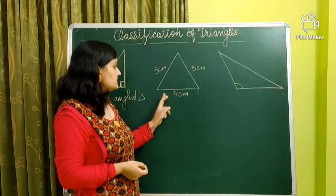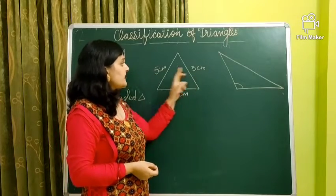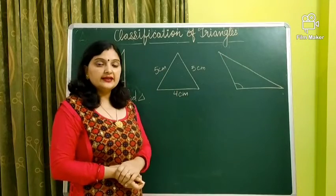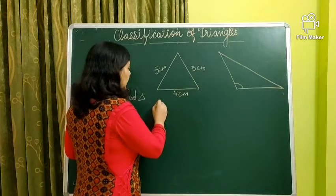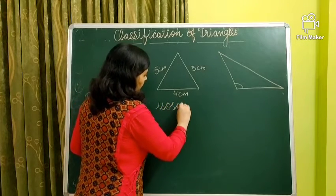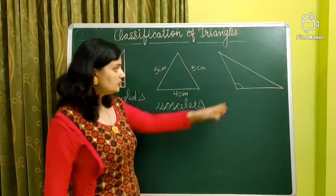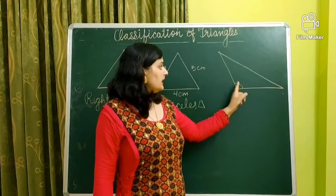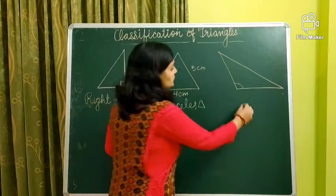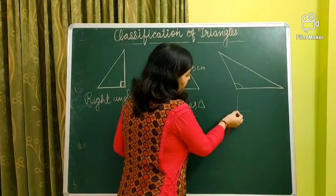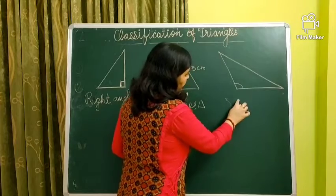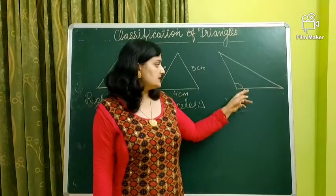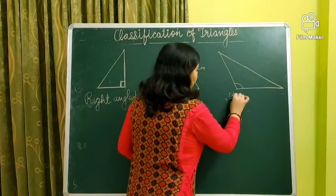The second triangle is based upon its sides because sides are given. It has two sides equal. So the name of this triangle is isosceles triangle. Now the third one — again, no sides are given, so it is based on the angle. If you look at this angle, it is greater than 90 degrees, so this is an obtuse angle. Therefore, this is an obtuse angled triangle.